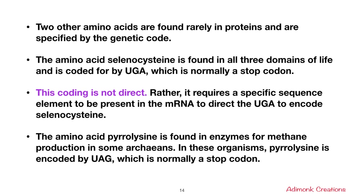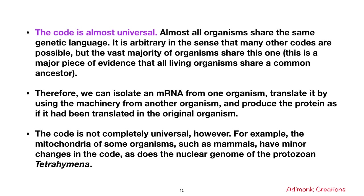The final property and the main topic for today is the universality of the genetic code. Almost all organisms share the same genetic language. The code is arbitrary in the sense that many other codes are possible, but the vast majority of organisms share this one. This is a major piece of evidence that all living organisms share a common ancestor. Because of this universality, we can isolate an mRNA from one organism, translate it using the machinery from another organism, and produce the same protein. However, the code is not completely universal.